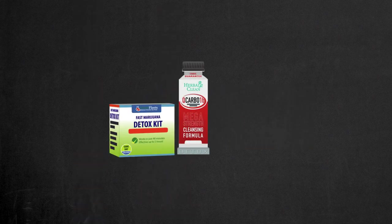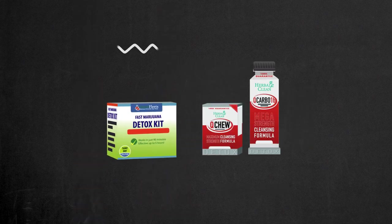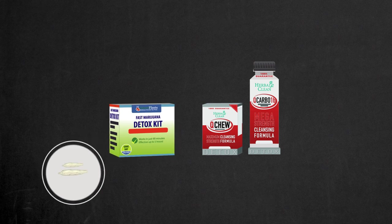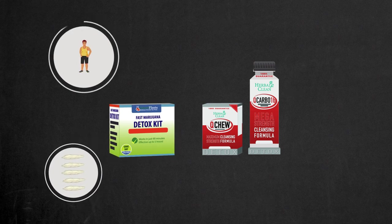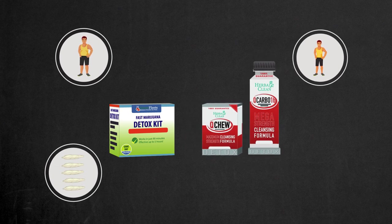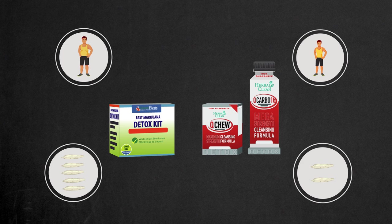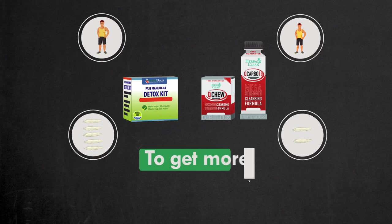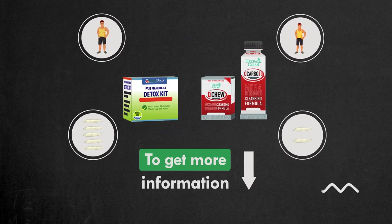The kit is available in two options: extra strong, for people with higher toxin levels or large body mass; and regular, for people under 200 pounds or occasional users. To get any of these kits, follow the link below the video.